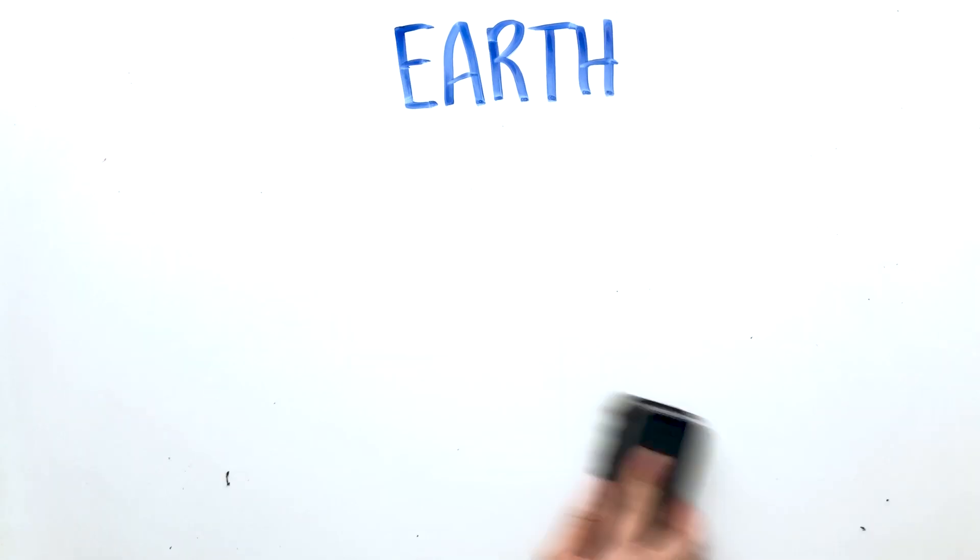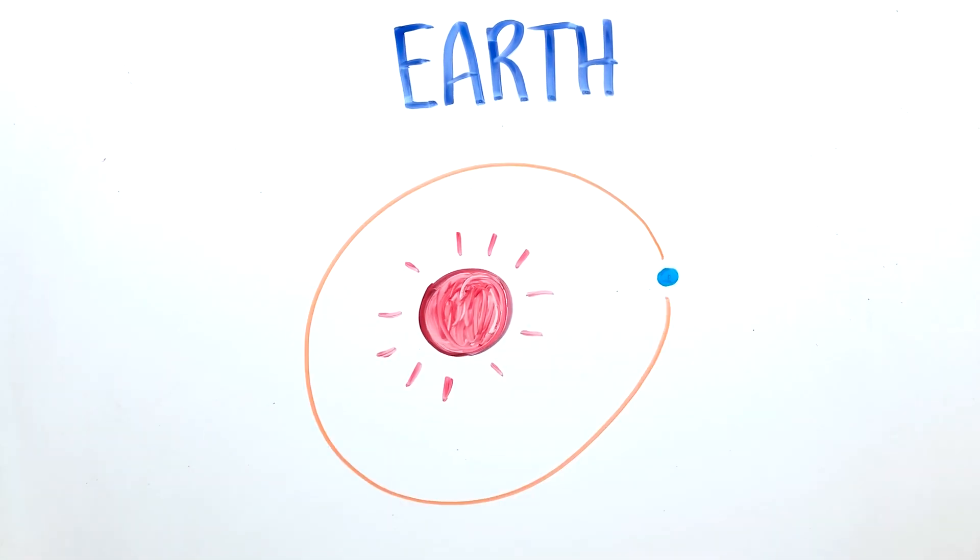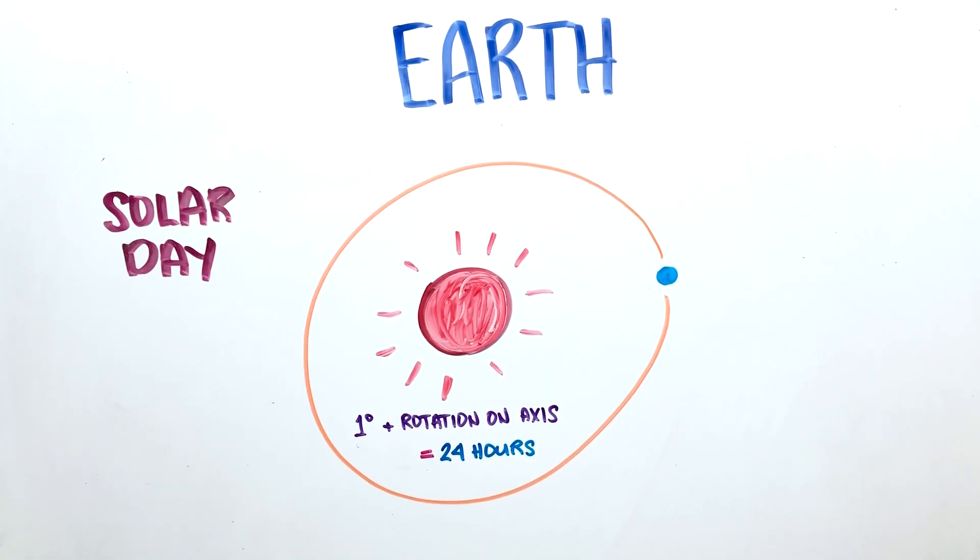Earth orbits around the sun. The sun moves compared to the background stars by about 1 degree. And when you add up this little motion from the sun and the rotation on its axis, we get a total of 24 hours. This is known as a solar day. It is the amount of time that it takes for the sun to return back to the same place in the sky.